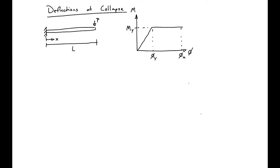Up until this point we've looked solely at deflections within the elastic range. The question is, what are our deflections going to be at collapse? This can be answered using a simple cantilever with a point load at the end shown here, and this member will have some moment-curvature behavior shown on the right.